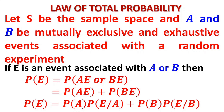Now, AE is nothing but A intersection E, and BE is nothing but B intersection E. Whenever two events have some connection, the probability of A intersection E is P(A) × P(E/A). Similarly, the probability of B intersection E is P(B) × P(E/B). Recollect: P(E/A) is the probability of event E knowing that A has occurred; P(E/B) is the probability of E knowing that B has occurred.